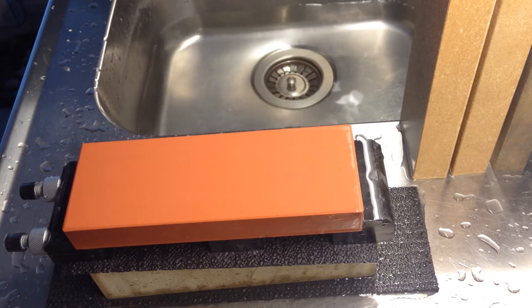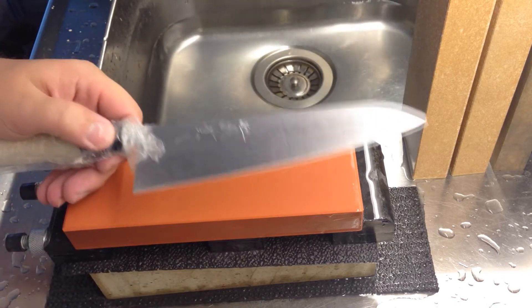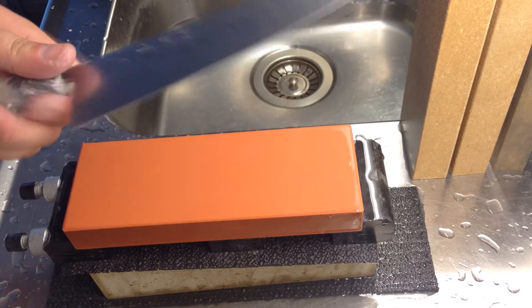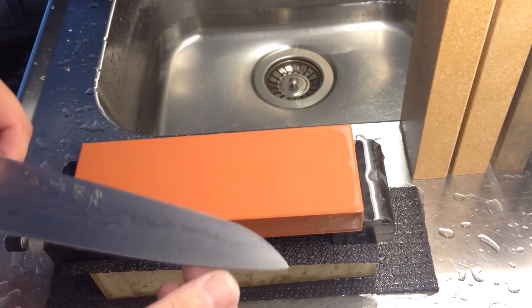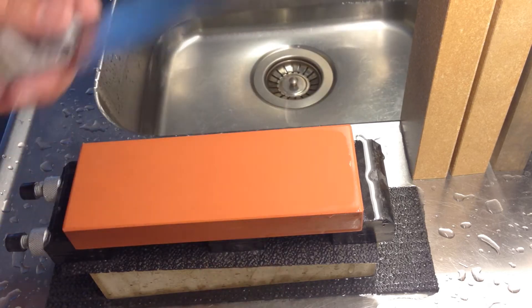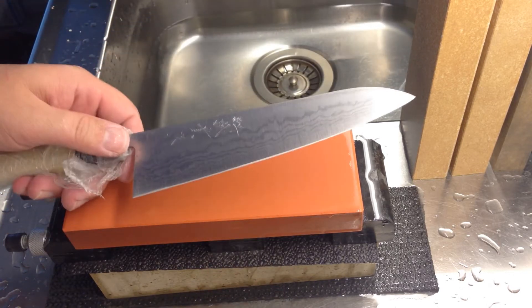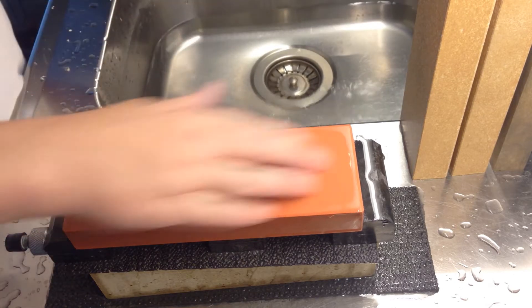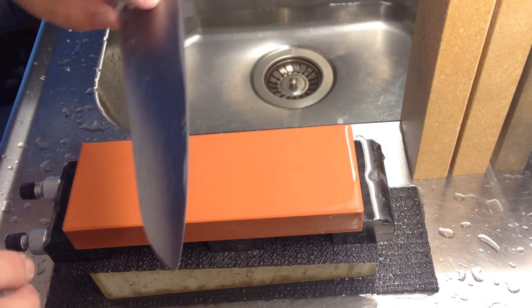So I will sharpen the small Tanaka Gyuto 180 blue steel Damascus. I did put an edge on here that is 1K Ume series. So let's see what this stone can deliver for us.